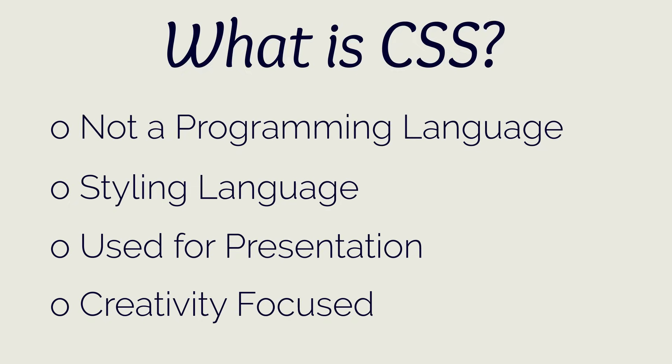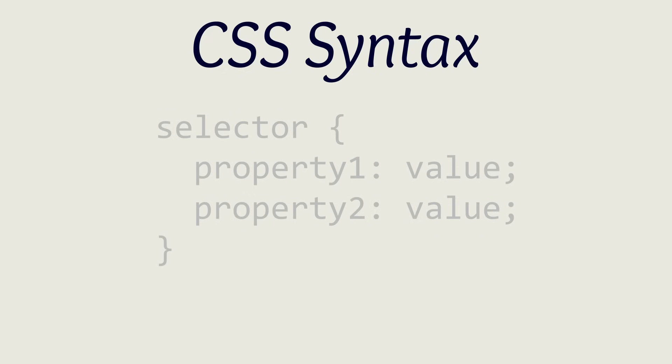Now that we understand what CSS is, let's dive into the details of how to use CSS. First, we need to discuss the syntax of CSS. Luckily, the syntax is straightforward and easy to understand. The first part of the syntax is the selector. There are many different types and combinations of selectors, which we'll talk about later, but all you need to note is that a CSS style starts with a selector to apply the style to. Next comes an opening and closing curly bracket that are used to denote the start and end of the styles that apply to the selector.